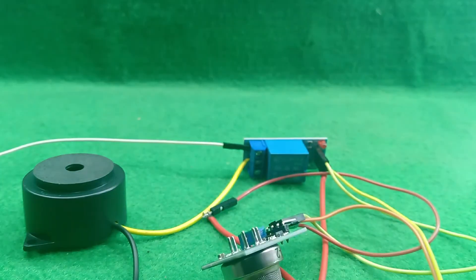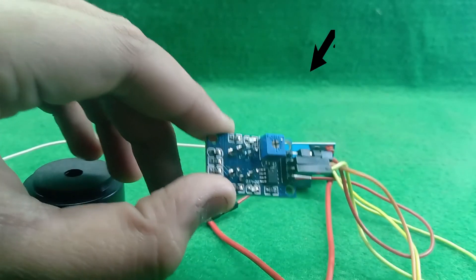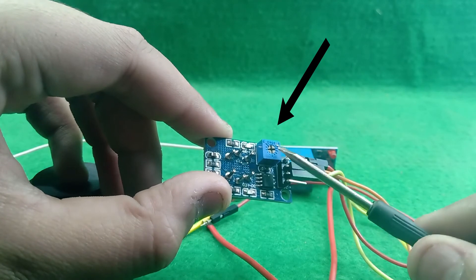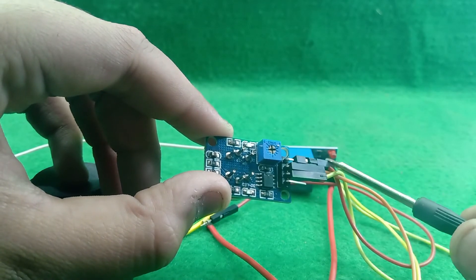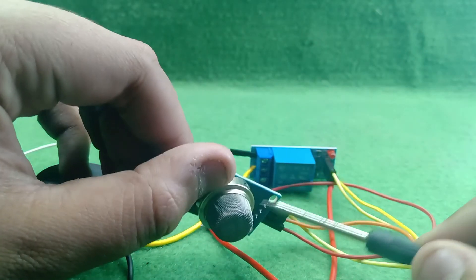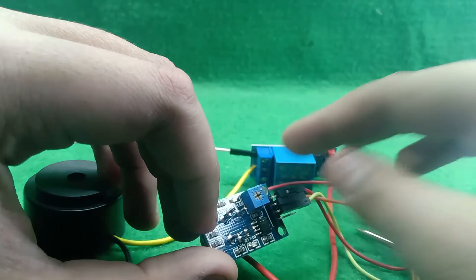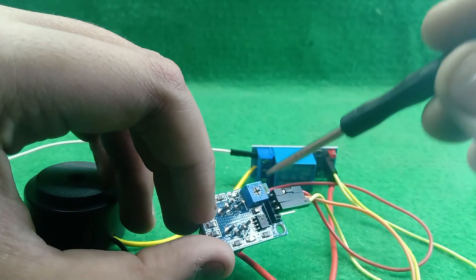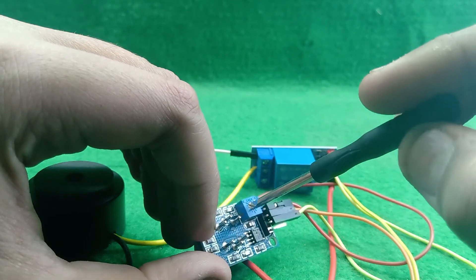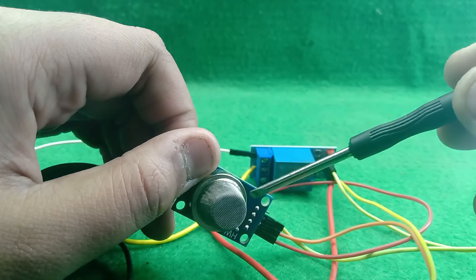Friends, in this circuit, you can see here the preset. This one. This preset is to control the sensitivity of gas sensor. So, when we control this preset, then it changes the sensitivity range of this gas sensor.